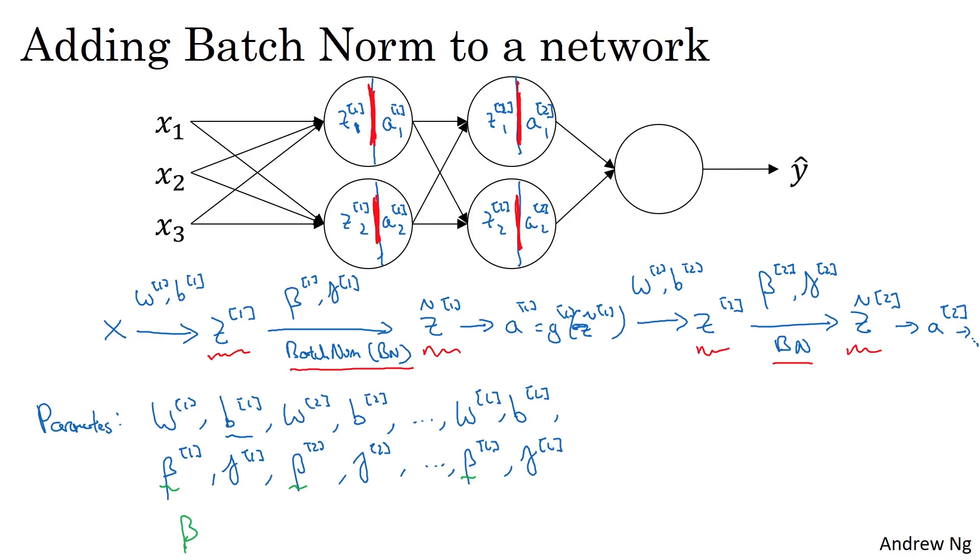The authors of the Adam paper had used beta in their paper to denote that hyperparameter. The authors of the batch norm paper had used beta to denote this parameter. These are two completely different betas. I decided to stick with beta in both cases, in case you read the original papers. But the beta1, beta2, and so on that batch norm tries to learn is a different beta than the hyperparameter beta used in momentum and in the Adam and RMSprop algorithms.